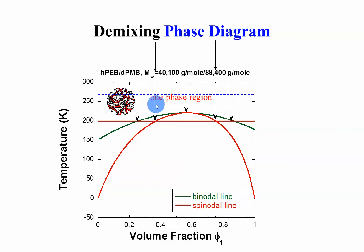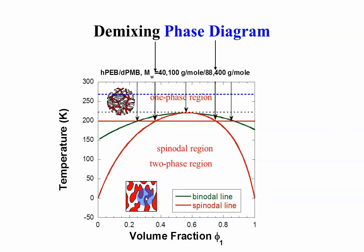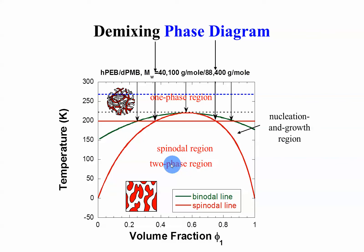This is the one-phase region, completely mixed for polymer blends. This is the spinodal region. Between the binodal and spinodal is the nucleation and growth region. We can have two forms of phase separation: spinodal phase separation, or nucleation and growth type of phase separation, where there is a nucleating center and growth around that center. In the spinodal region, there is almost a sinusoidal wave where component one and component two alternate.